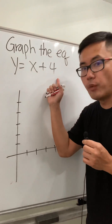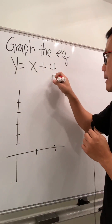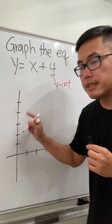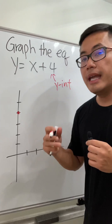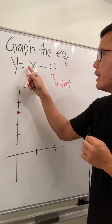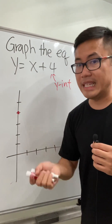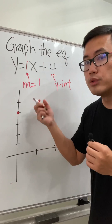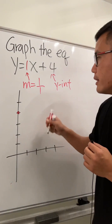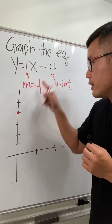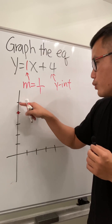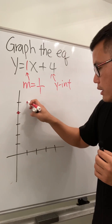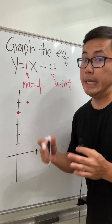Y is equal to x plus 4. So we first start with the y-intercept, which is this number here. That means we are going to go up to 4 — 1, 2, 3, 4 on the y-axis — and we put a point here. And then we look at the slope, which is the coefficient of x. We don't see anything written, but there is technically a 1 there, so the slope is 1. Let's look at this as a fraction: 1 over 1. The 1 on top tells us to move up 1 unit, because it's positive. And then the bottom 1 tells us to go to the right 1 unit. So we have up 1, to the right 1, and that gives us a second point. And then we just connect the dots.